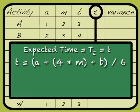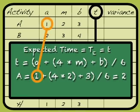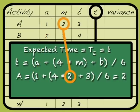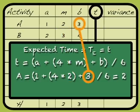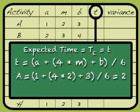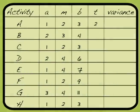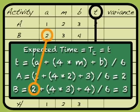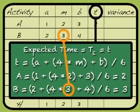For activity A, we substitute in our time estimates: optimistic time of one, plus four times the most likely time of two, plus pessimistic time of three. That adds up to twelve, divided by six gives us two. We can fill in two on our chart. For activity B: two is the optimistic time, plus four times the most likely time of three, plus four which is the pessimistic time — that adds up to eighteen. Divided by six, our expected time for activity B is three.